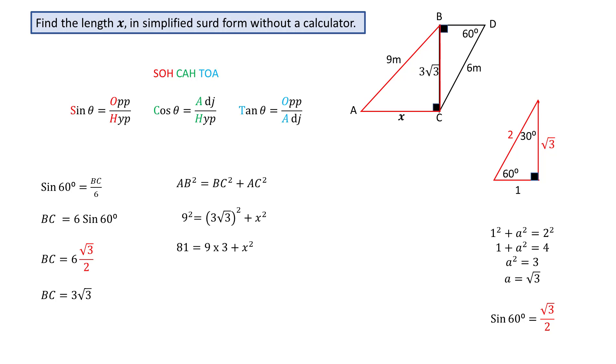Evaluate giving 81 equal to 9 times 3 plus x squared, since 3 squared equals 9 and root 3 squared gives 3. Giving 81 equal to 27 plus x squared.